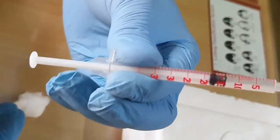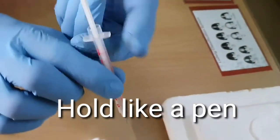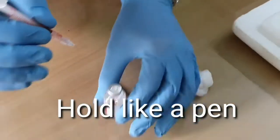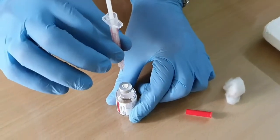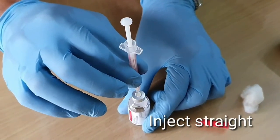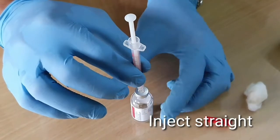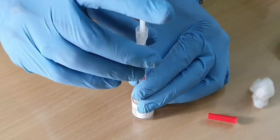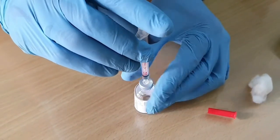Now we are going to inject. Hold like a pen and inject air by piercing it straight through the center of the rubber which is there at the bottle. Hold it there and inject the air into the bottle.